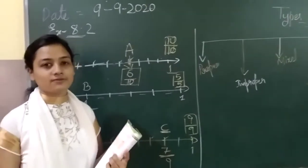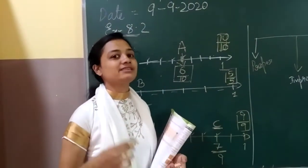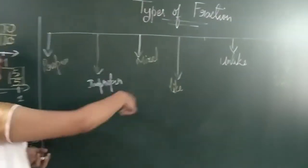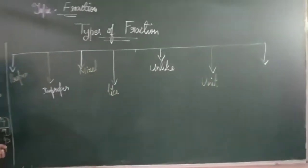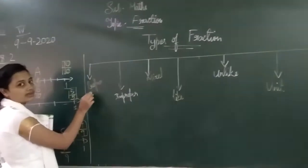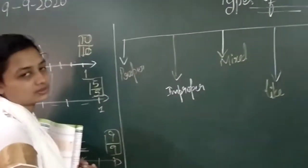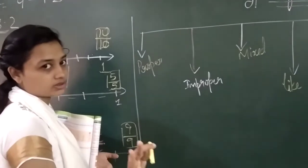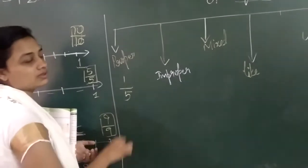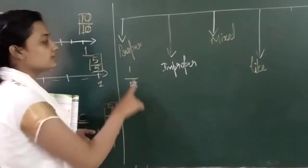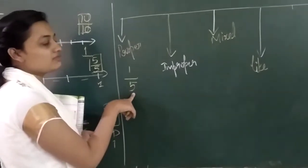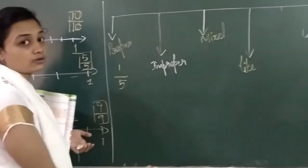We will now go and learn the types of fractions. You have so many types of fractions. Now let us learn the different types. You can see I have written the types of fractions here. I will be teaching you what these types are. So if you see the first one, I have written proper fraction. You know what a fraction is — a sleeping line with a number up and a number down: numerator and denominator.